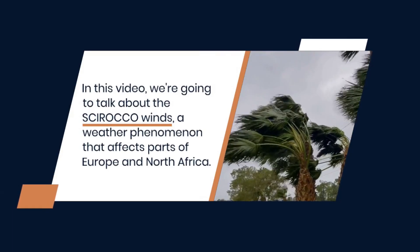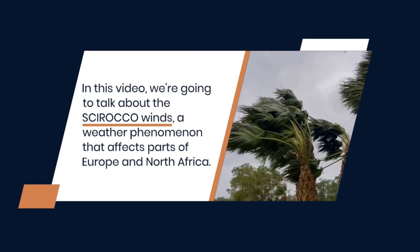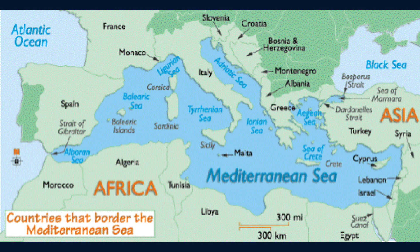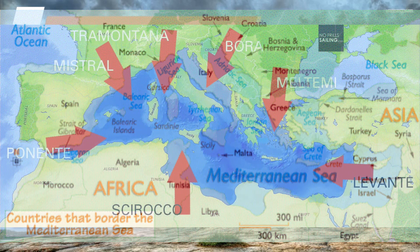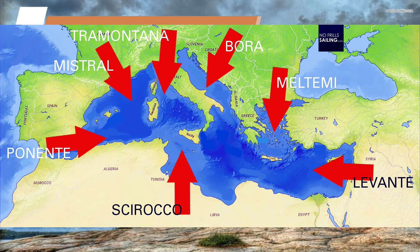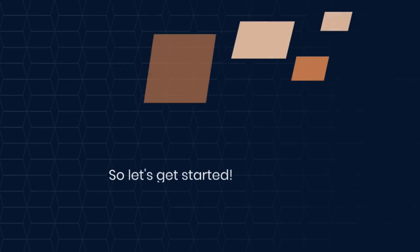The Sirocco winds are a weather phenomenon that affects parts of Europe and North Africa. We'll take a look at what causes these winds, where they occur, and how they can impact the environment. So come with us, let's get started.